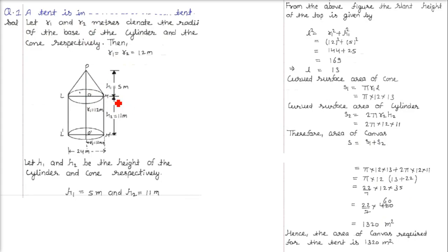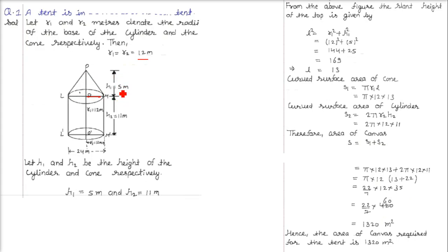The first question involves a tent with two parts: a conical portion and a cylindrical portion. The radius of the cylindrical part is 12 meters, which is also the radius of the conical part. The height of the conical part is 5 meters and the height of the cylindrical part is 11 meters.